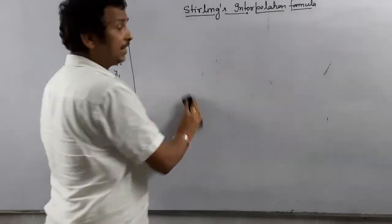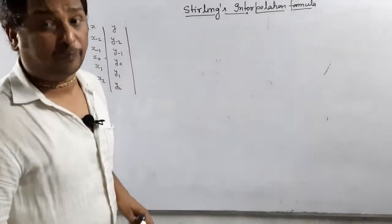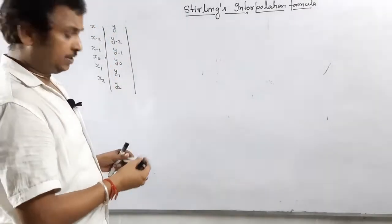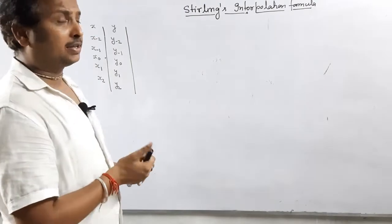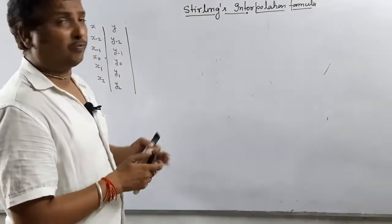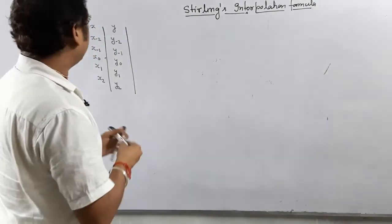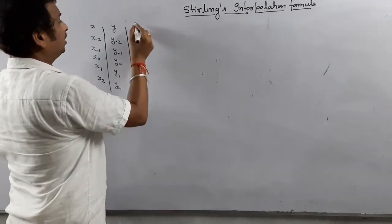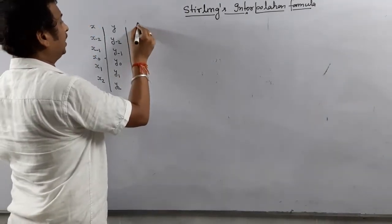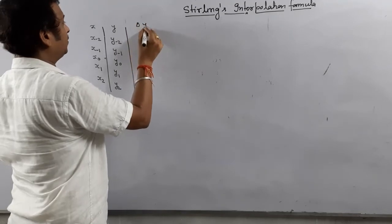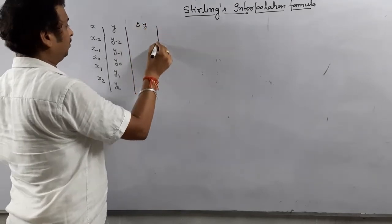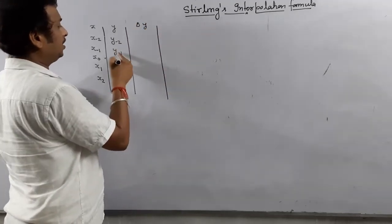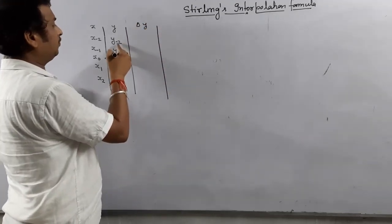Once the renaming is ready, we are going to create the central difference table. I will tell you how to create the difference table, and then I will explain how to write the formula, because for the formula, the table is required. That is why I started with the table first. Once you write y, then write delta y.